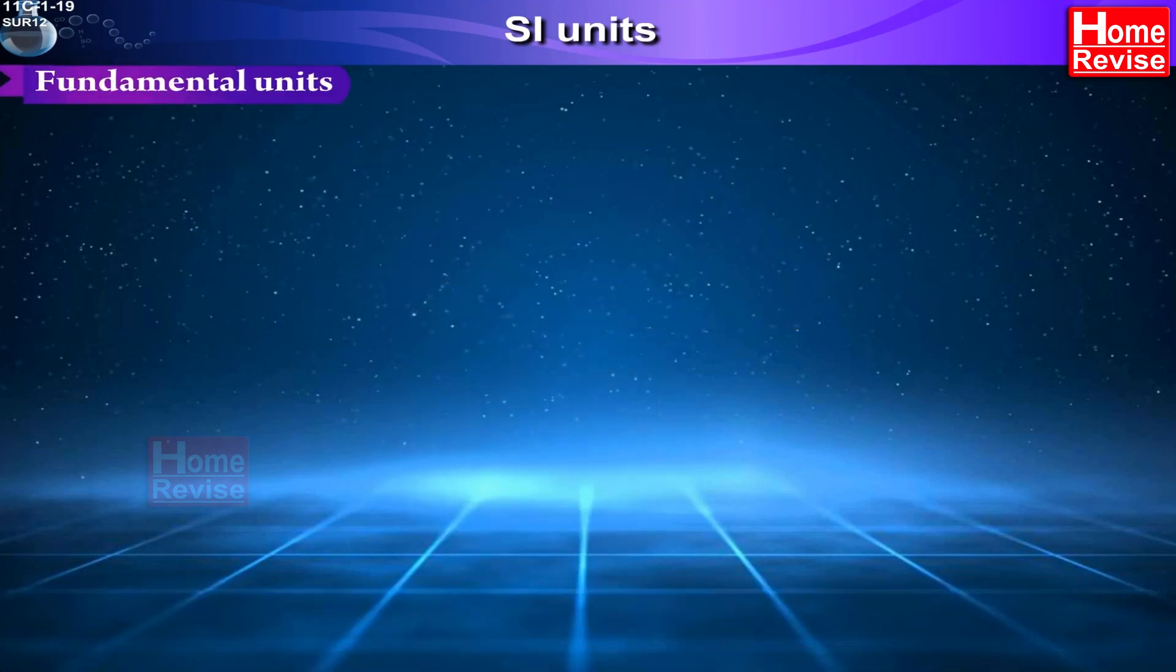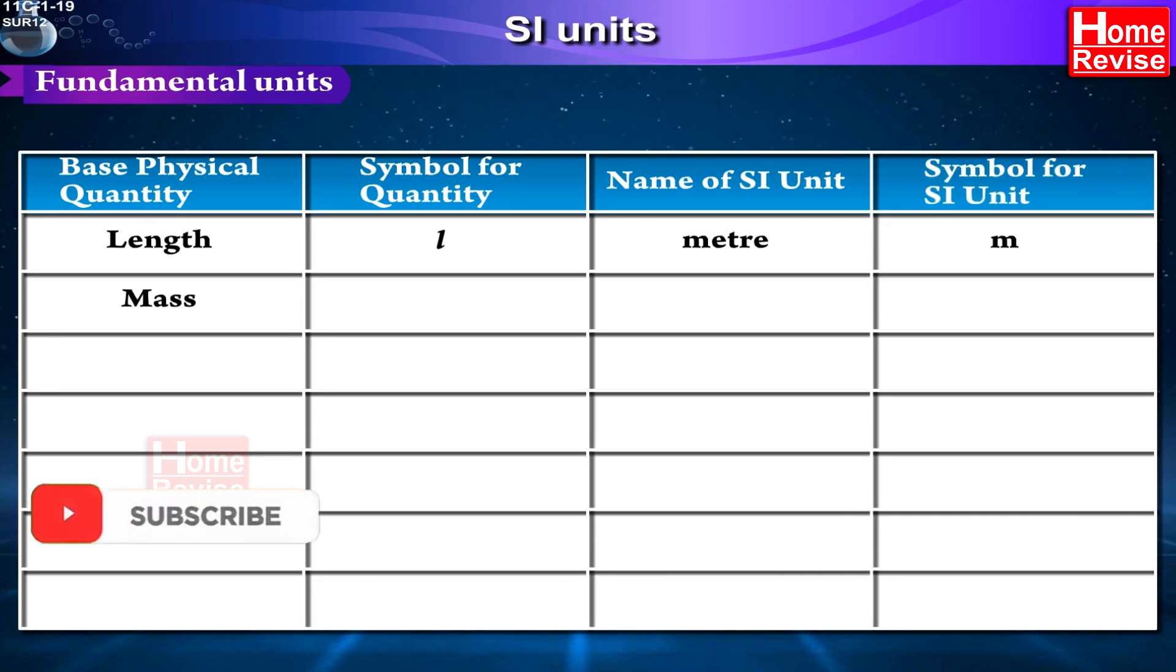Fundamental units. Base physical quantity: Length, Symbol for quantity: L, Name of SI unit: Meter, Symbol for SI unit: m. Base physical quantity: Mass, Symbol for quantity: M, Name of SI unit: Kilogram, Symbol for SI unit: Kg.